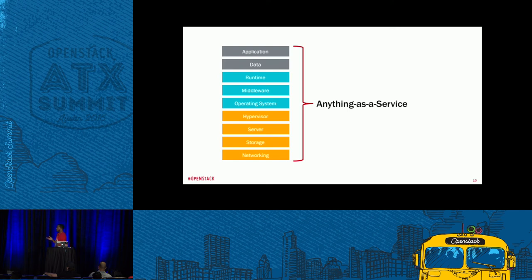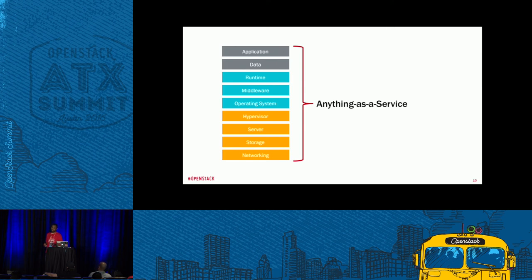Cloud computing is now at a place where you pretty much have anything as a service. You have firewalls, load balancers — a lot of stuff is abstracted. You've got desktops as a service, databases as a service. Pretty much you name it, someone has it as a service. In fact, Rackspace now has OpenStack as a service.